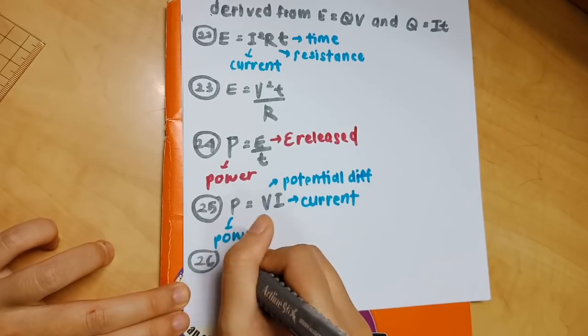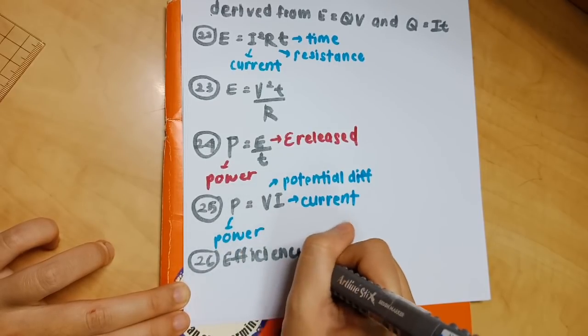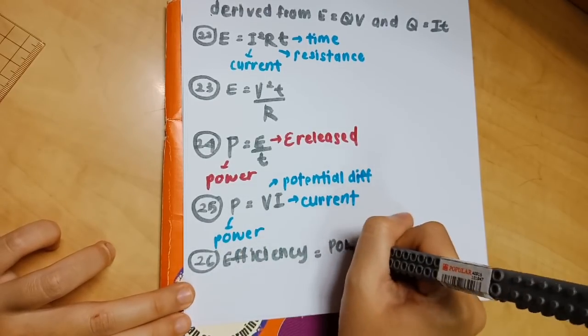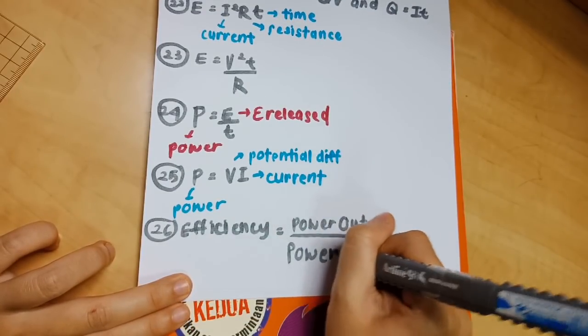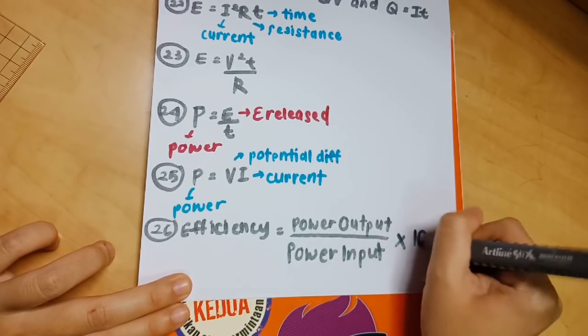Number 26 is the formula to calculate efficiency. The formula is power output divided by power input times 100%. The efficiency will always be less than 100% because there is energy lost.